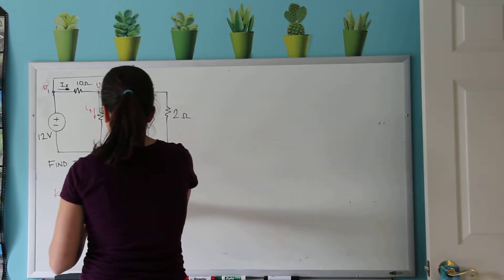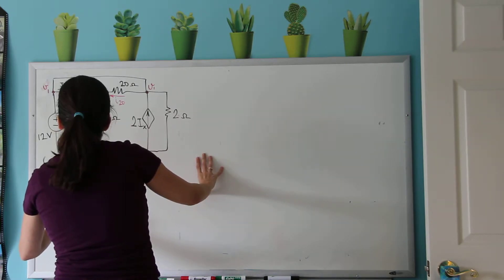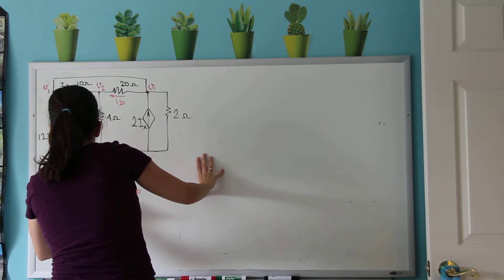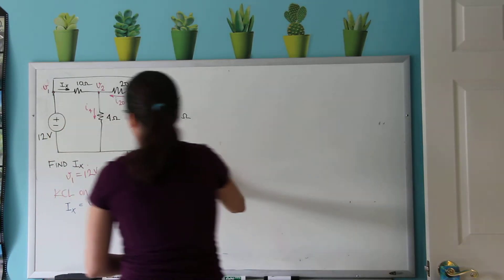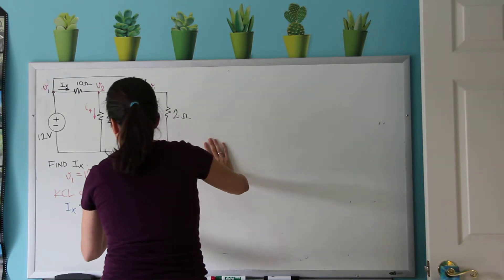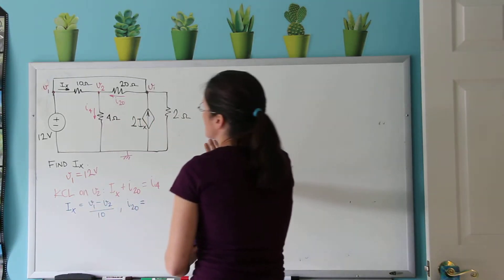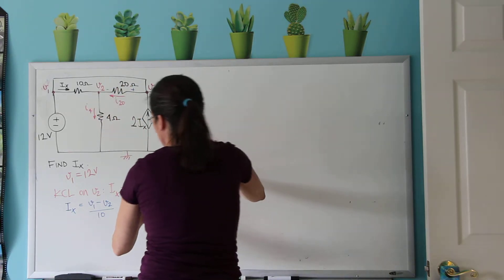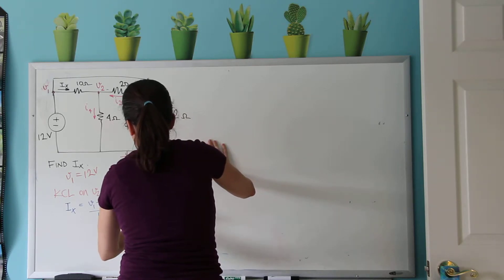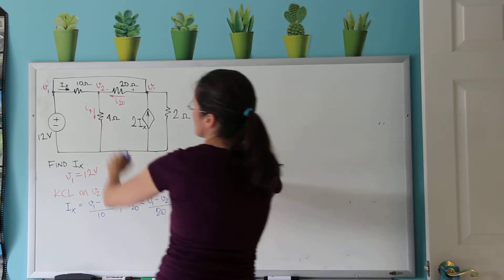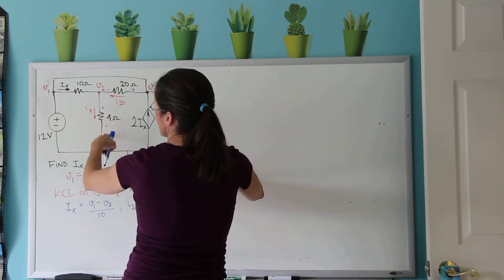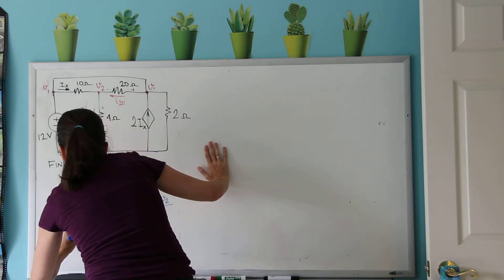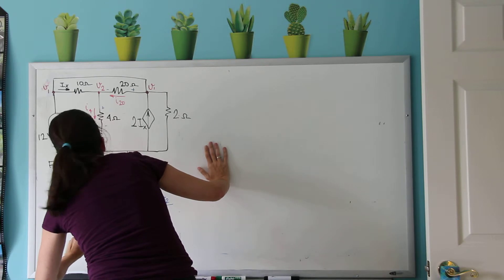So let's do that. So Ix equals V1 minus V2 over 10. And then I20 equals V1 minus V2 over 20. And I4 equals V2 minus 0 here, my reference, divided by 4.